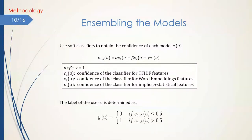To ensemble the models, we use soft classifiers to obtain the prediction confidence of each model instead of using just the predicted label. Then, the overall confidence for an arbitrary user U is calculated with this equation. C1, C2, and C3 are respectively the confidence of the TF-IDF features classifier, word embedding features classifier, and implicit plus statistical features classifier. The contribution of the classifiers is controlled with the weight parameters alpha, beta, and gamma. Finally, the label of the user is set to 1, considering them as a fake news spreader if the confidence output is greater than 0.5; otherwise, the label is set to 0.